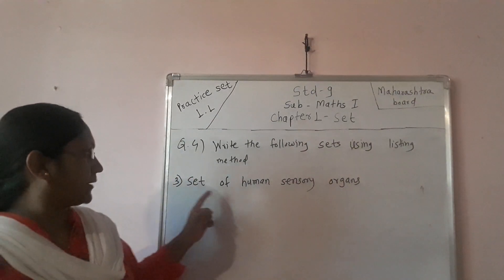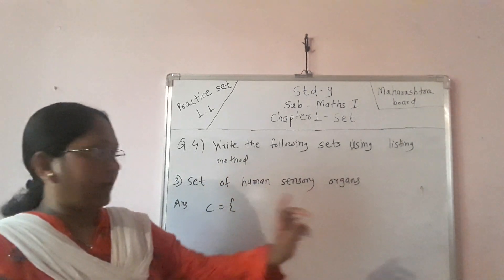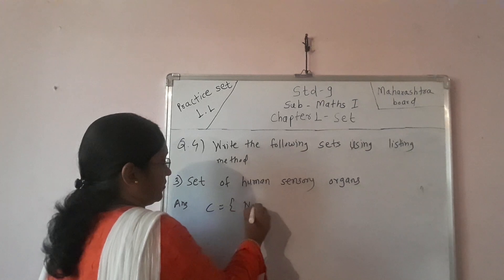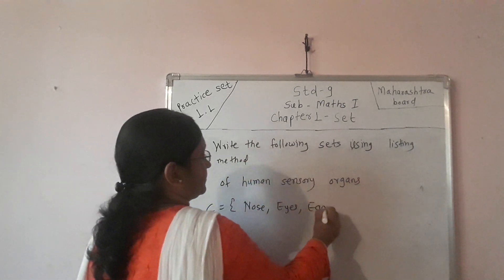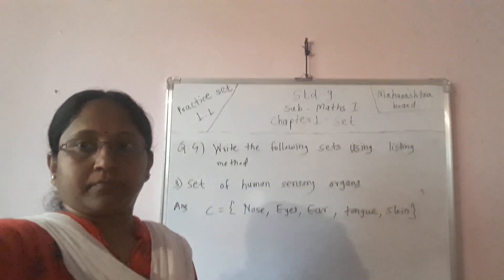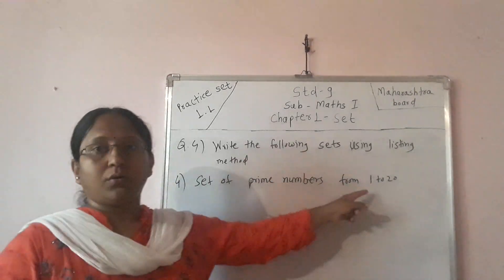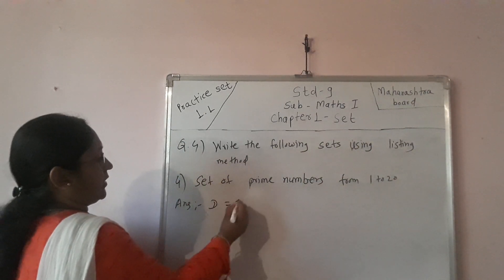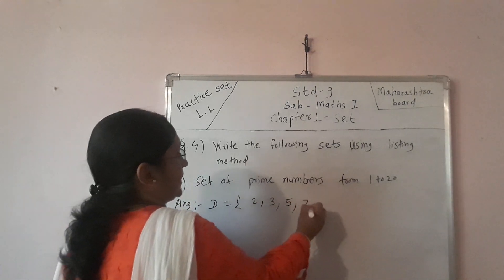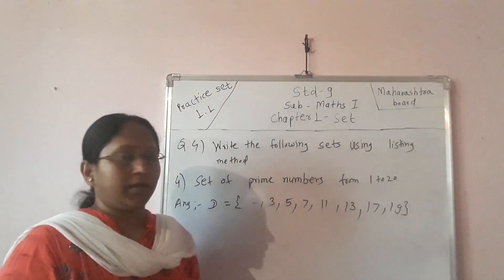Next sub-question: set of human sensory organs. I declare it as C. We know there are five human sensory organs: nose, eyes, ear, tongue, and skin. Then next sub-question: set of prime numbers between 1 to 20. I declare that set as D. The prime numbers from 1 to 20 are: 2, 3, 5, 7, 11, 13, 17, and 19. This is the answer.